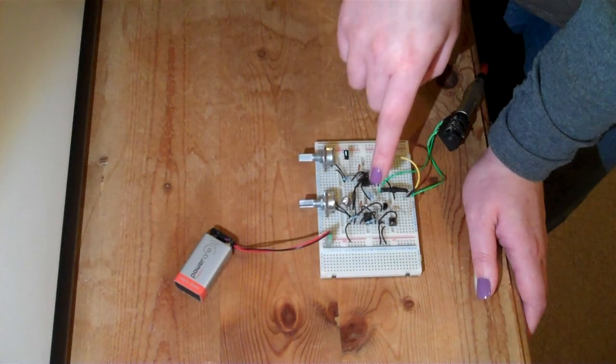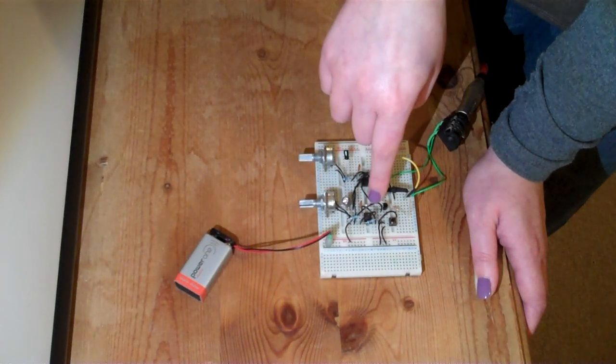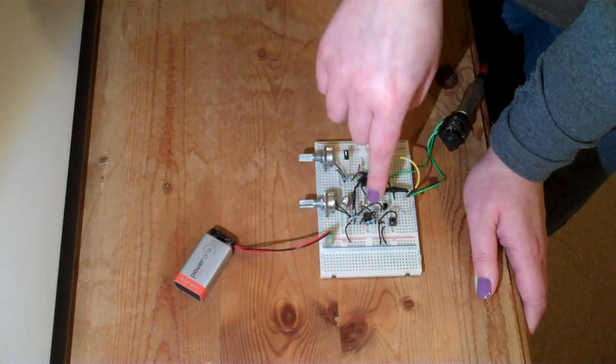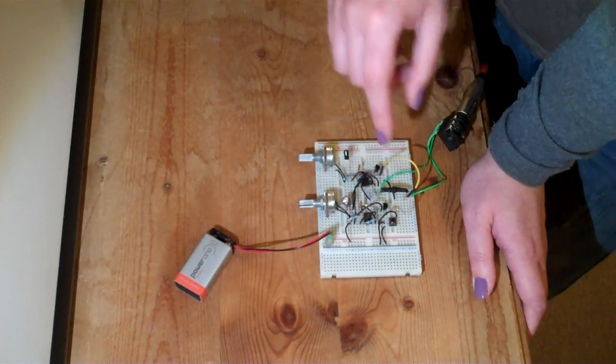How we've been able to generate this envelope is by using pin 6 on this 555 chip here. That's the threshold pin. I'm just going to turn on the oscilloscope and then I'll be able to show you what that waveform looks like.